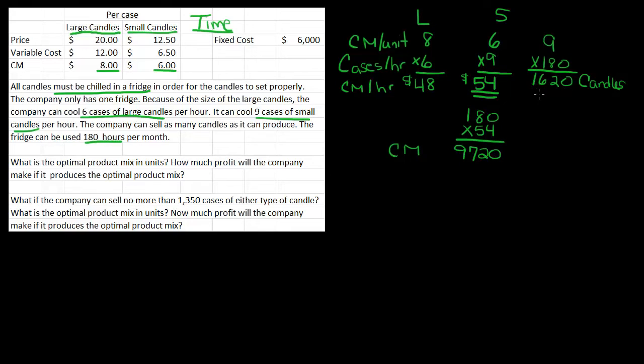You could also take the 1,620 and multiply that by 6, which would also give me $9,720. So there's two different ways you can get that contribution margin.